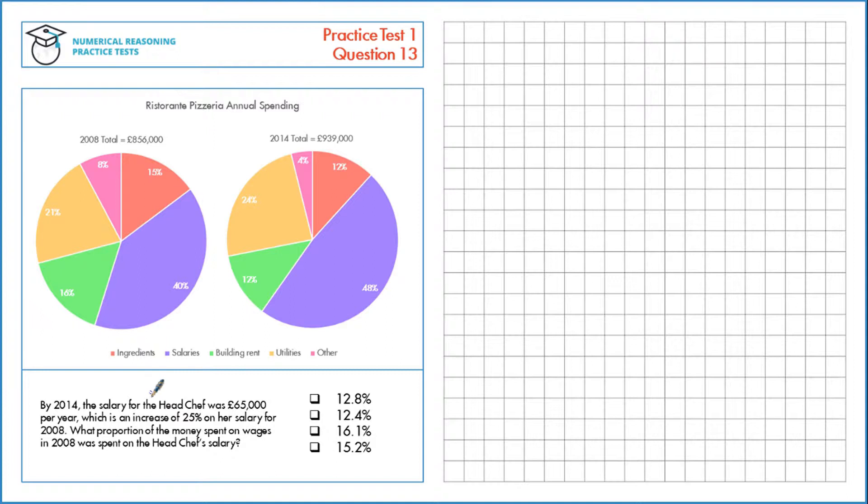Let's figure out what her wage was for 2008. If it's been increased by 25%, then in 2008 it was 100%. We've added on 25%, so the current 2014 value is 125%, which is equivalent to 1.25 as a multiplier.